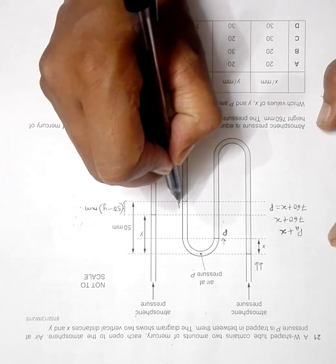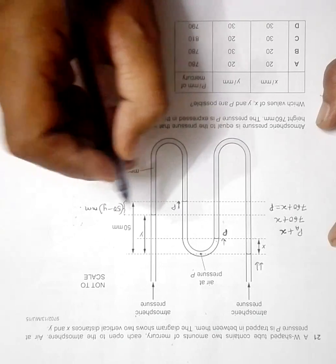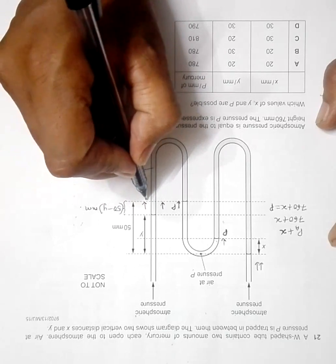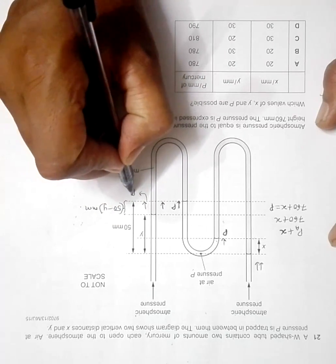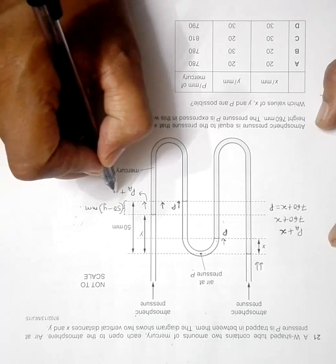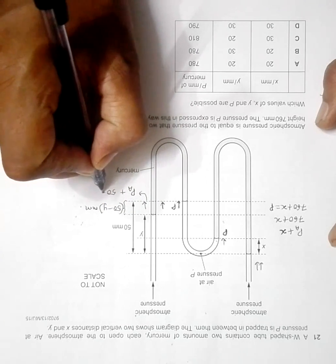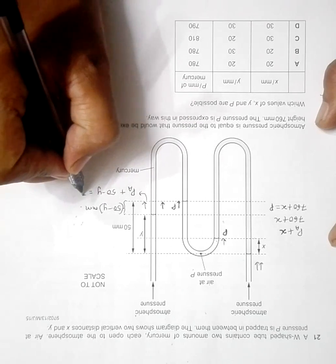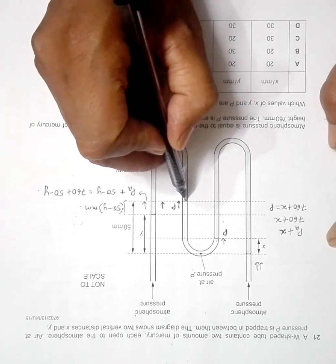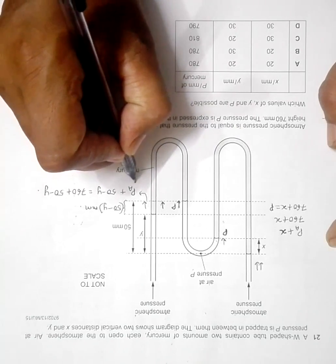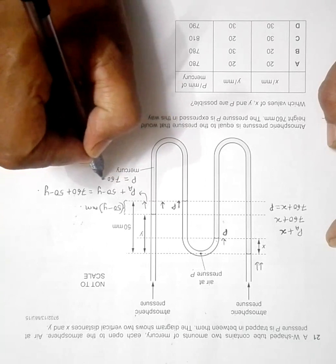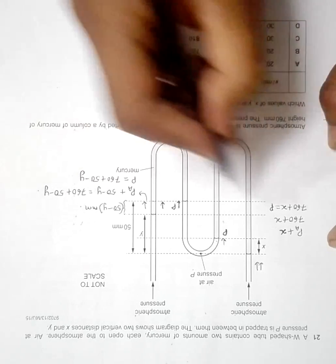On the other side, the pressure is simply P. Looking from the opposite side, the pressure equals atmospheric pressure plus the mercury column of height 50 minus y, giving 760 plus (50 minus y). Since the pressures on both sides must be equal, we have: P equals 760 plus 50 minus y.